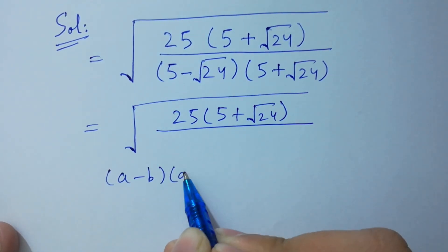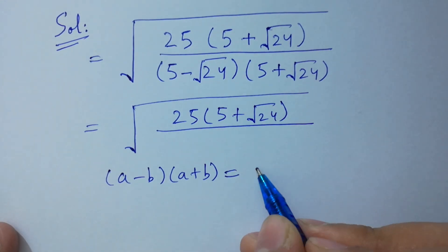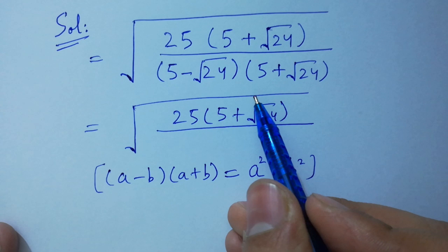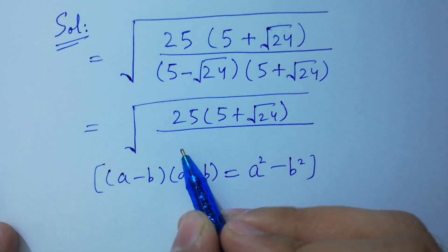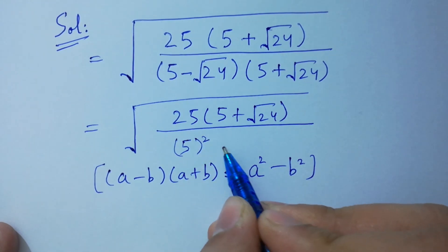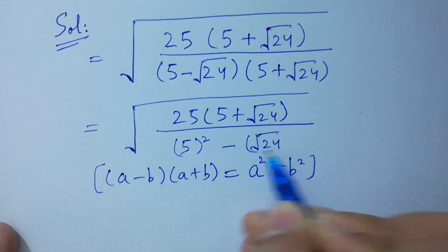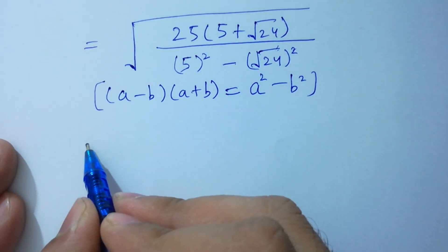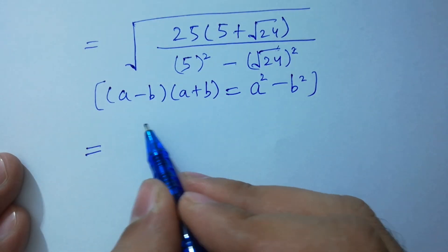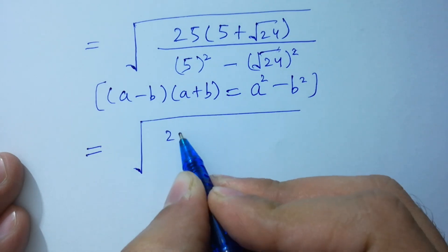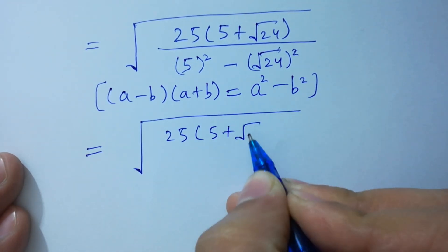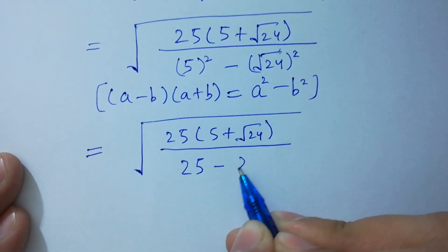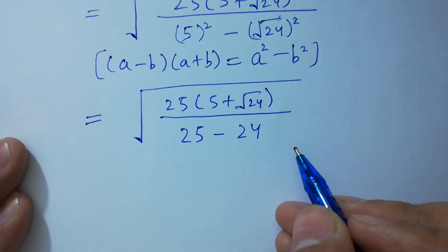The denominator is the same as the formula (a minus b)(a plus b) equals a squared minus b squared. So (5 minus square root of 24) times (5 plus square root of 24) will be 5 squared minus square root of 24 squared. The square and square root cancel, so we have 25 minus 24.